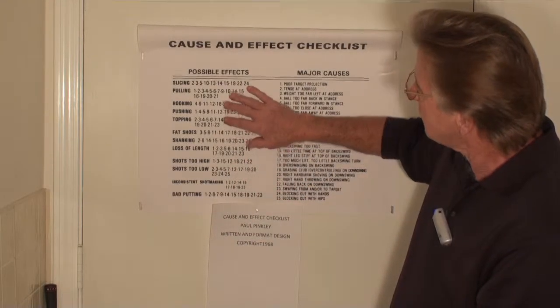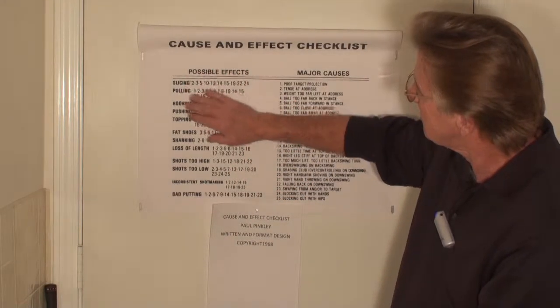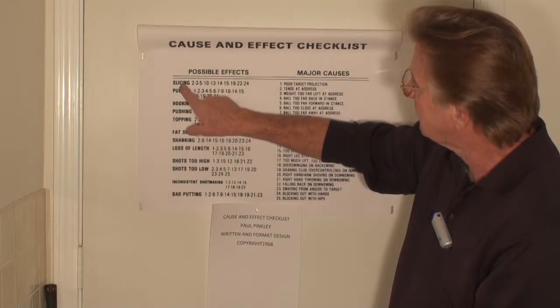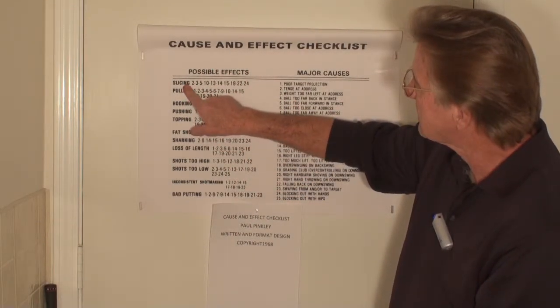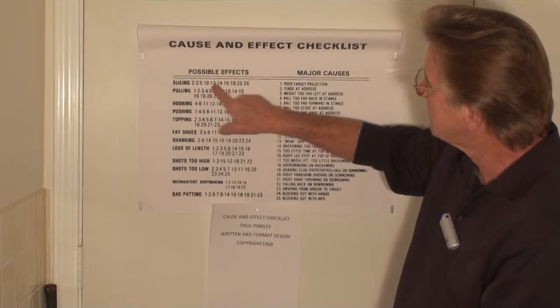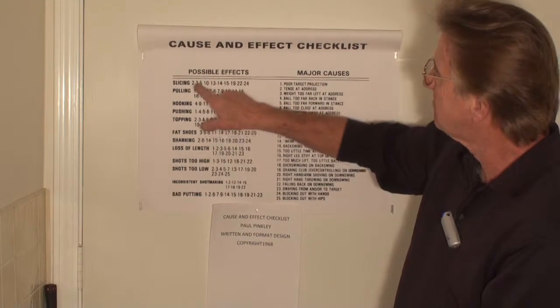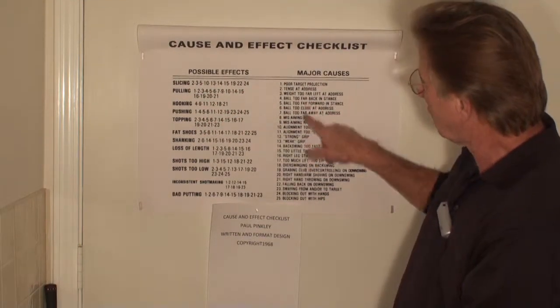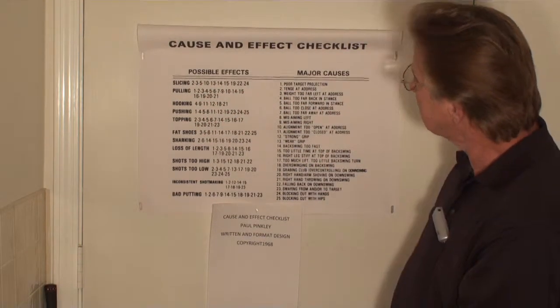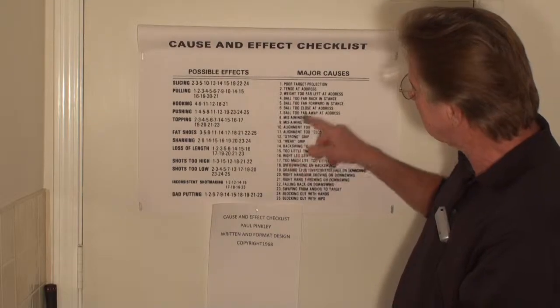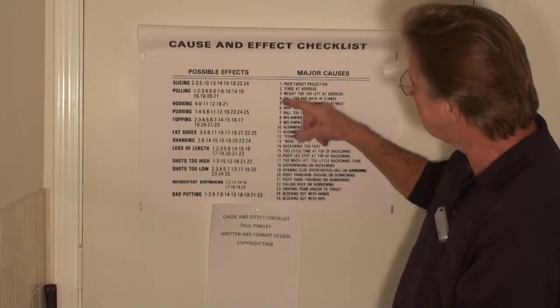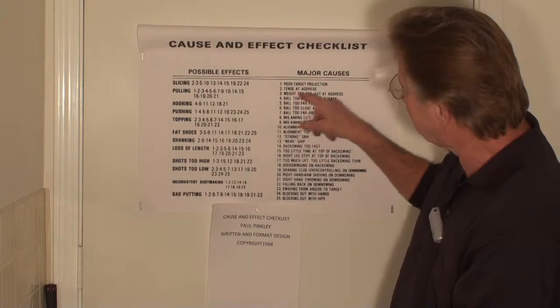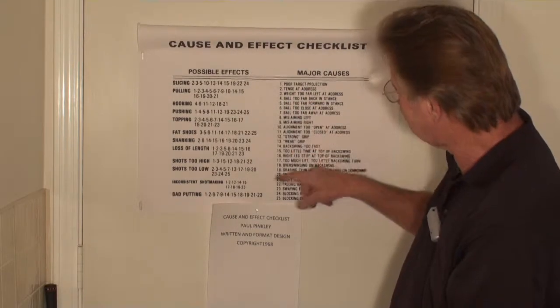So I'm starting to think, well, this is a pretty good idea. For example, on slicing there are 10 different possible causes, and obviously listed here: 2, 3, 5, 10, 13.